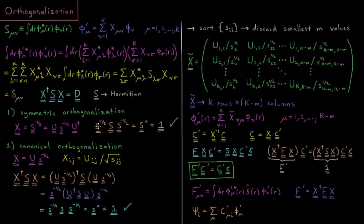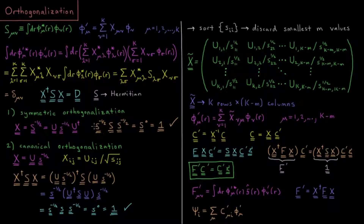If we multiply S to the negative one-half on one side, then S, then S to the negative one-half on the other side, the result is S to the zero power, which is an identity matrix. That's a good checkmark because an identity matrix is diagonal. This type of orthogonalization is called symmetric orthogonalization, where we use S to the negative one-half on each side and symmetrically orthogonalize the result.